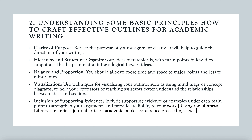Now let's move on to understand some basic principles for crafting effective outlines in academic writing. First, let's talk about clarity of purpose. It's crucial that your outline clearly reflects the purpose of your assignment. This clarity will guide the direction of your writing, ensuring that every section of your paper aligns with your main objective. Next is hierarchy and structure — organize your ideas hierarchically, starting with your main points followed by sub-points. This structure helps maintain a logical flow of ideas, making it easier for your reader to follow your argument.